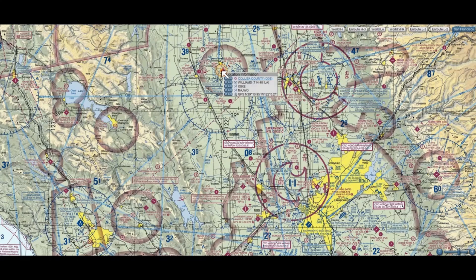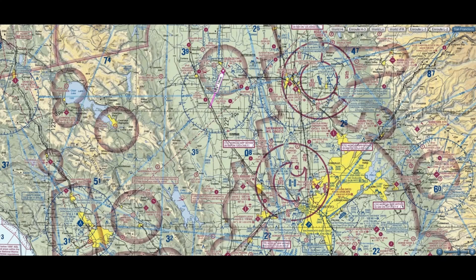So we're going to add Colusa here to our plan. Our first checkpoint is going to be this little town of Arbuckle — these yellow things here are towns and they should be easy to spot. We came out here because we have Highway 5 and the railroad tracks, and if you notice they point almost directly to Sacramento Exec. Notice that over here we have power lines. So if we come down here and fly down this corridor between Highway 5 and the power lines, as long as Highway 5 is on the left and the power lines are on the right, we're not going to get lost.